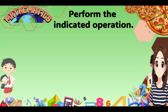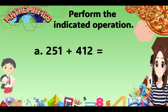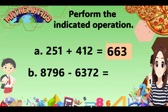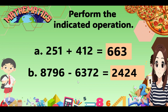Now let's perform the indicated operation. Letter A: 251 plus 412. We will add the numbers with the same place value. Letter B: 8,796 minus 6,372. Numbers with the same place value shall be subtracted. 6 minus 2, 9 minus 7, 7 minus 3, and 8 minus 6. That will give us 2,424.